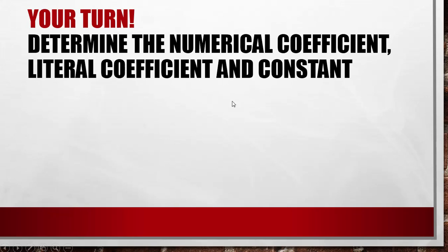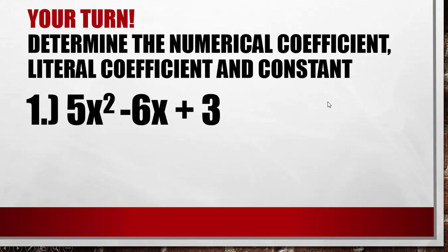Now your turn — determine the numerical coefficient, the literal coefficient, and constant. Number one: 5x² − 6x + 3. The numerical coefficients are 5 and negative 6. The literal coefficients are x² and x. And 3 is what we call the constant.